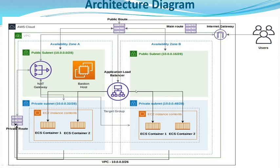Hello guys, welcome back to my channel. In the last session, we created a VPC, an internet gateway, associated that internet gateway to our VPC, and created an entry in the main route table which was associating a connection to the internet gateway. The agenda for today's session is we are going to create two public subnets.